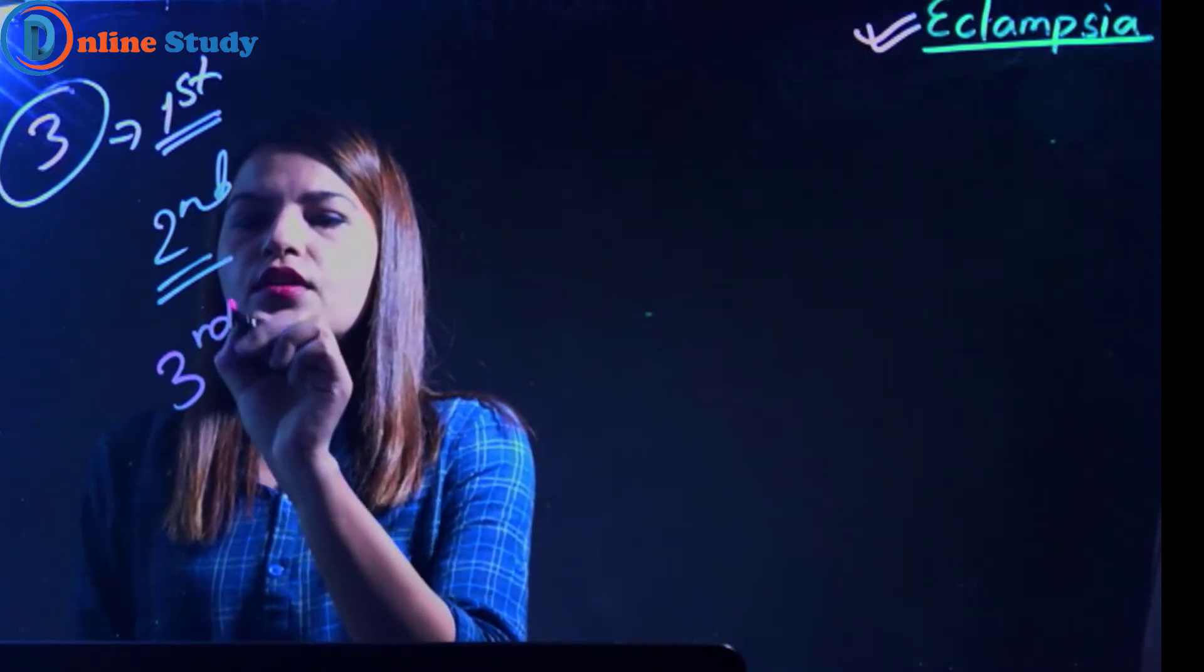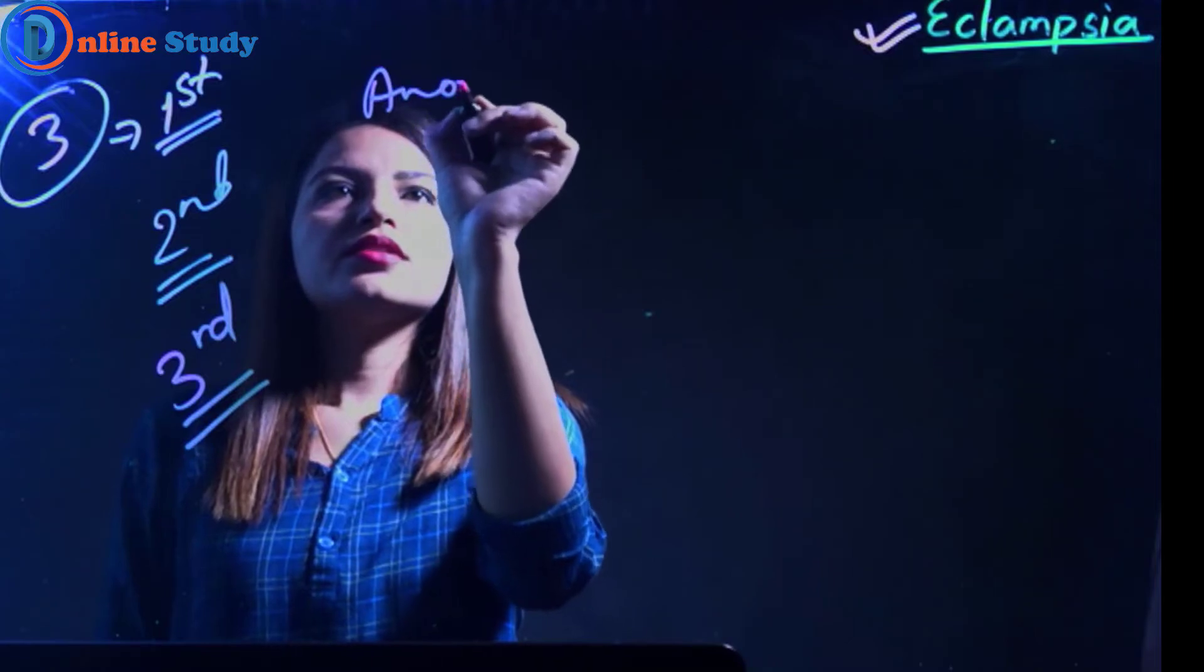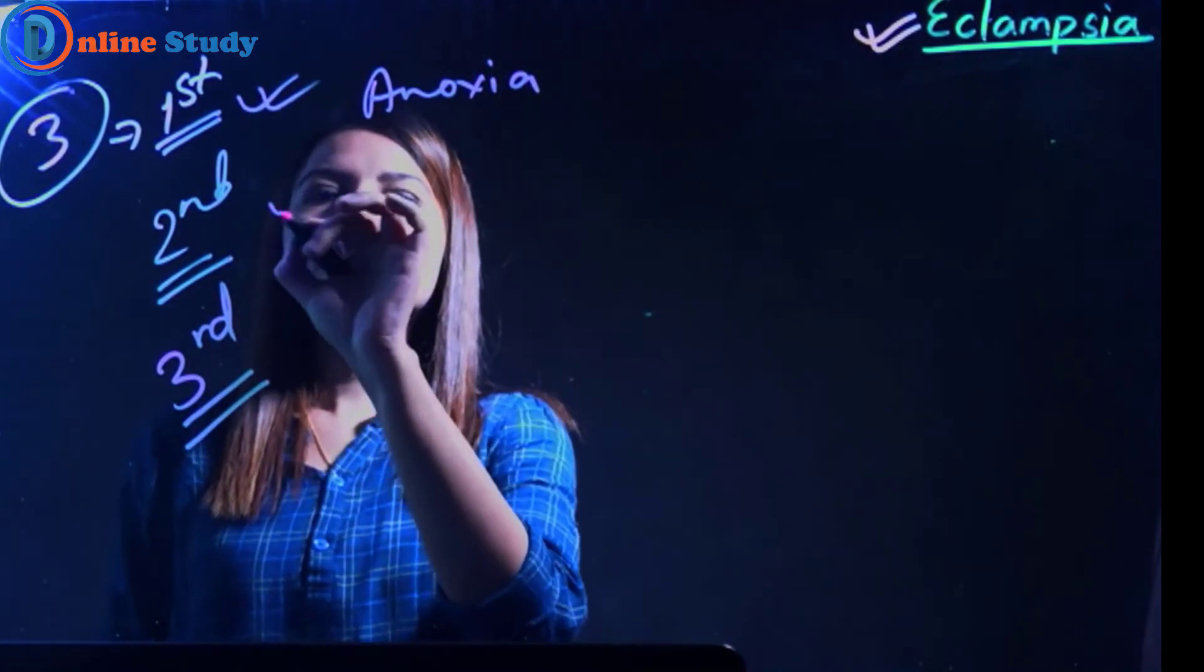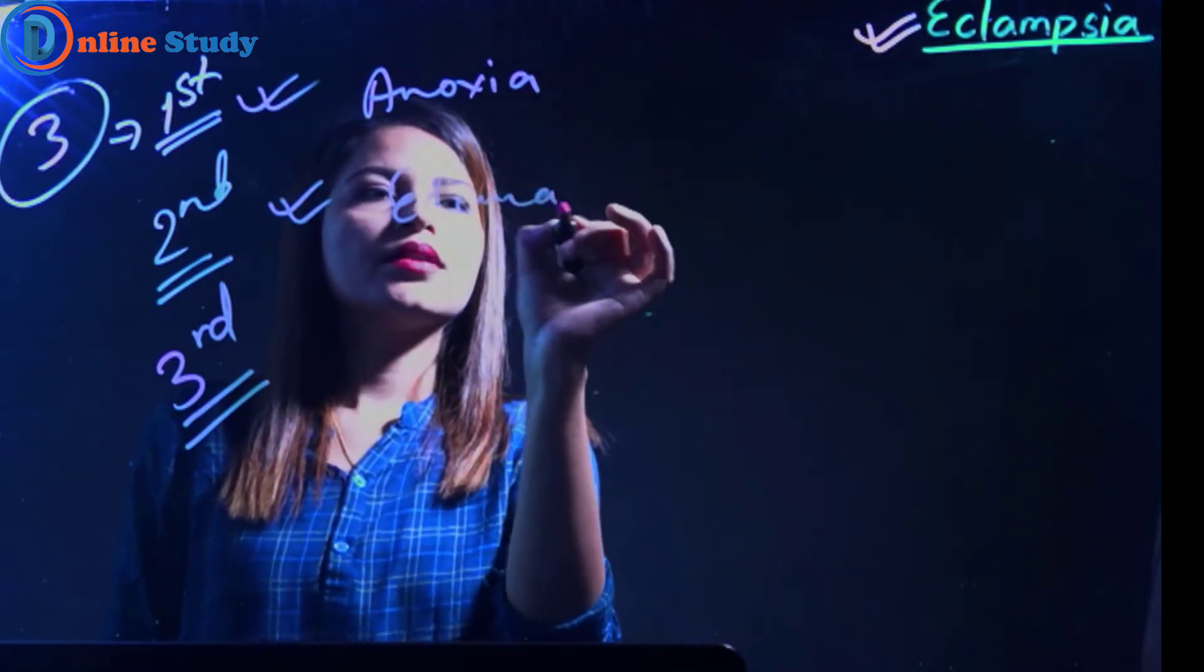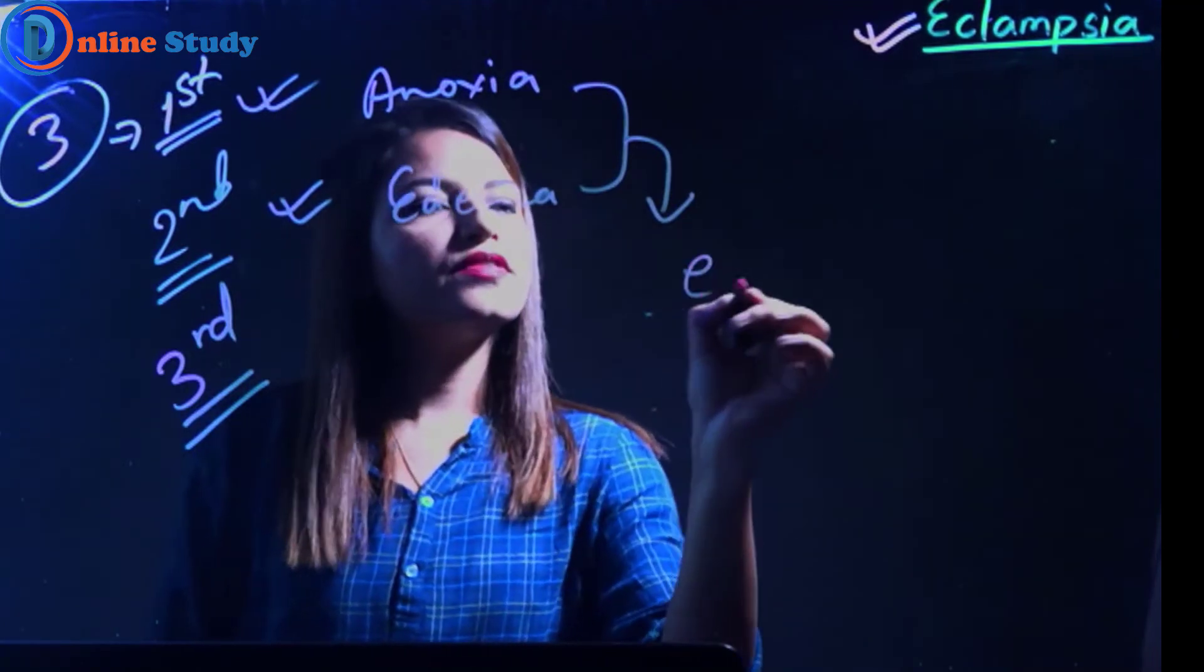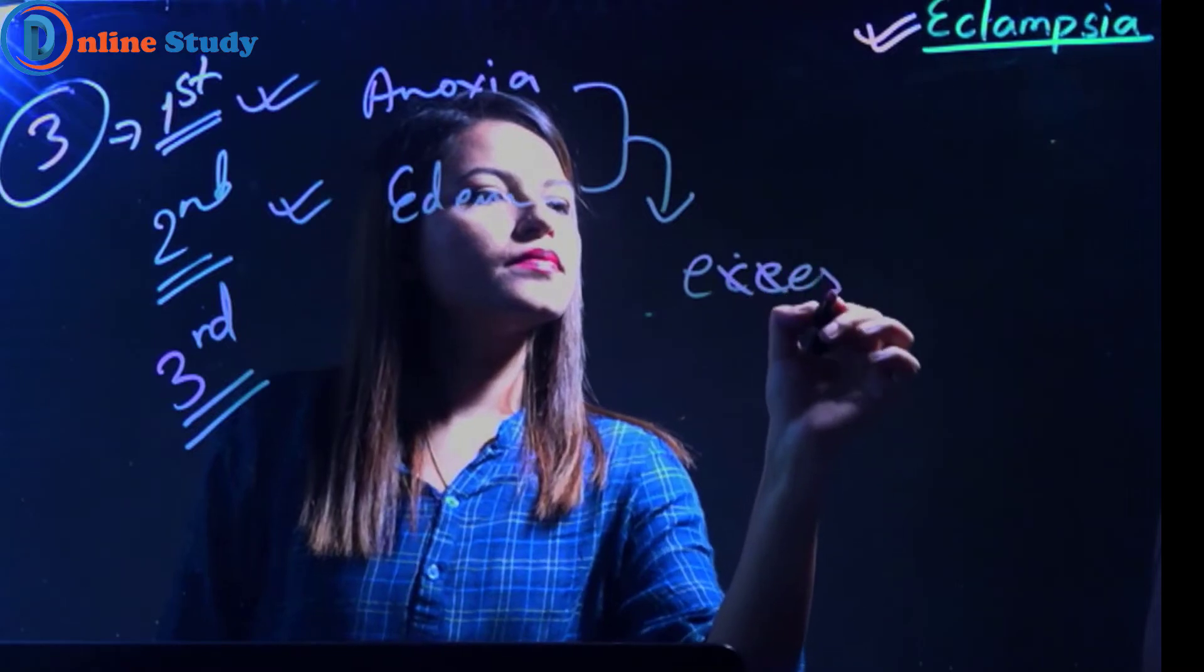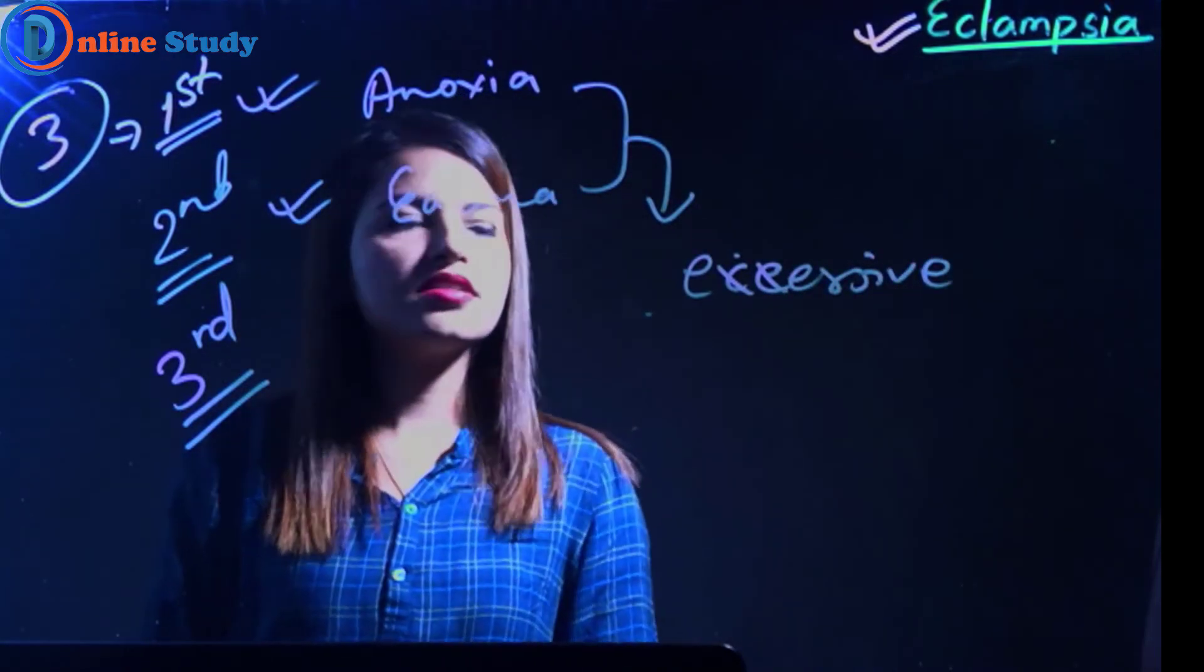Now, the third cause can be explained by when there is anoxia, there is excessive neurotransmitter release. Because of anoxia and edema, there is excessive neurotransmitter release, particularly glutamate. Excessive neurotransmitter excites the neuronal system.